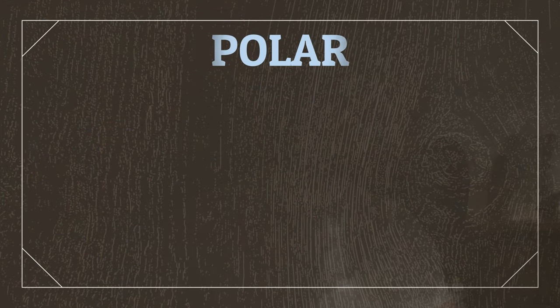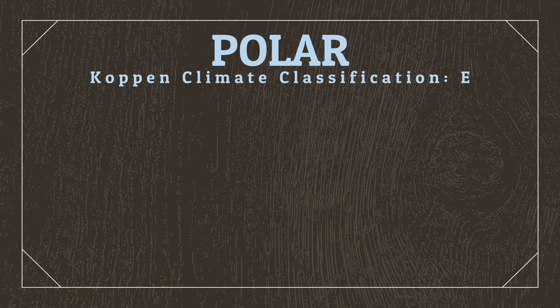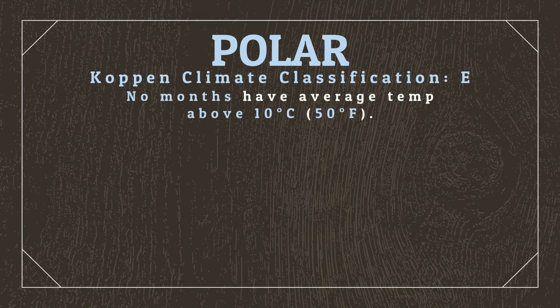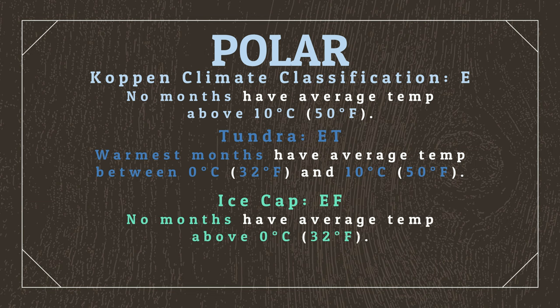Alright, let's do this. Polar climates, according to the Köppen Climate Classification System, are classified as climates where no months have average temperatures that exceed 10 degrees Celsius. Polar climates are then divided into tundra and ice cap climates, with tundra climates referring to areas where the warmest months have average temperatures between 0 and 10 degrees Celsius.